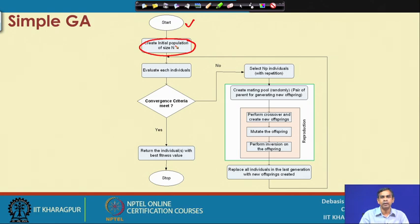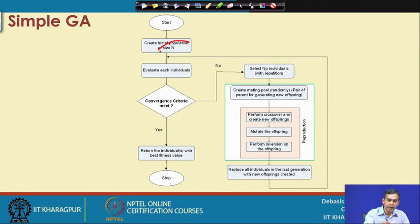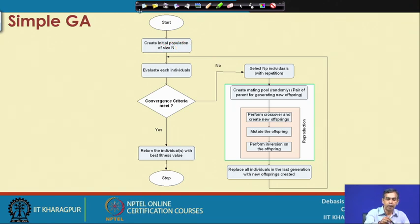Initial population is a collection of random solutions. The programmer decides the size N — it may be 100 or 1000. If we use a large value of N, we may reach a better solution more quickly but at the cost of more computation time. If N is small, we may terminate quickly but might not always get the correct result. So there is a trade-off, and population size N is an important GA parameter.